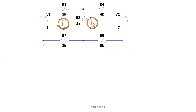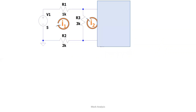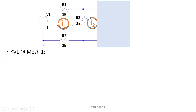Let's look first at mesh 1. This is the first mesh. We have current I1 and also another current I2 that acts upon the first mesh through R3, the 3kΩ resistor, because there are currents I1 and I2 flowing in this resistor, which is also a part of mesh 1.